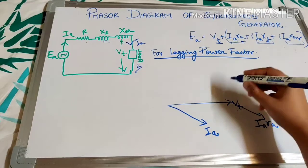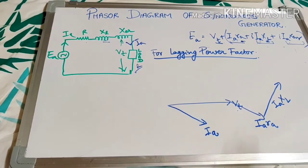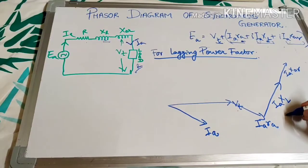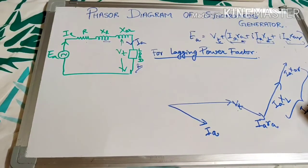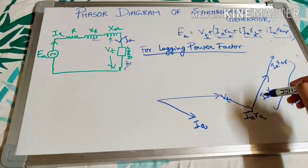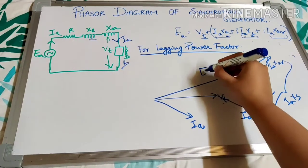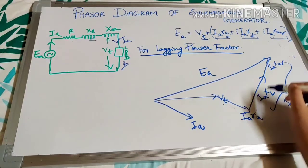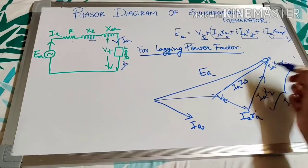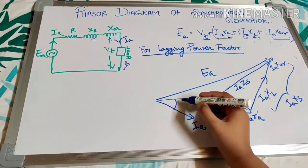For the lagging power factor phasor diagram: IaXl is added at 90 degrees to the current direction. We also add IaXar similarly. Combining IaXl and IaXar gives IaXs (synchronous reactance drop). The resultant of Vt + IaRa + IaXs gives Ea. The lagging power factor angle φ is marked in the diagram.